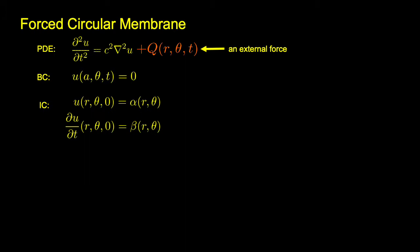We now consider the case of a forced circular membrane. We are adding a term Q of external force. By separation of variables, we write u as the sum of a_i(t) times phi_lambda_i.